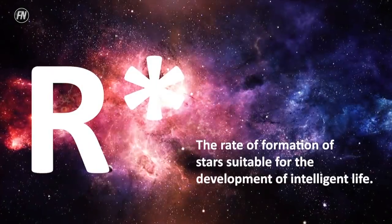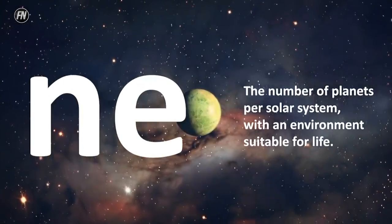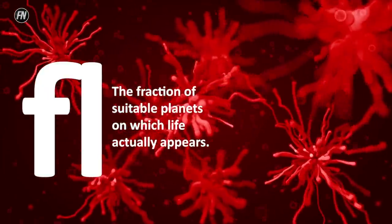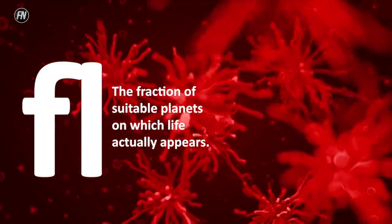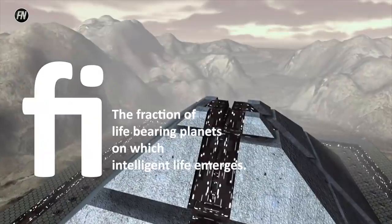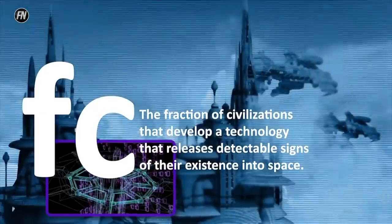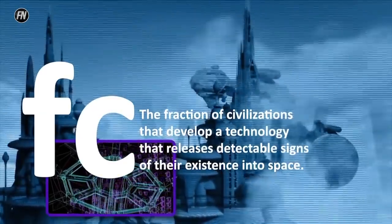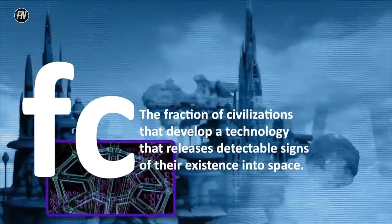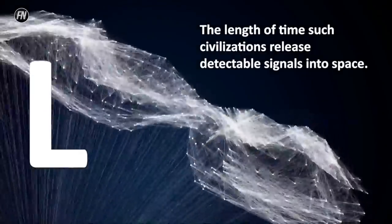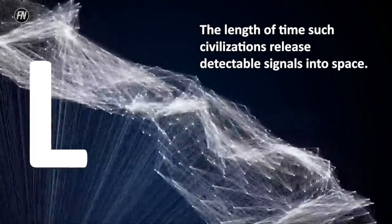It's the average rate of star formation in our galaxy times the fraction of those stars that have planets times the average number of planets that can potentially support life per star that has planets times the fraction of planets able to support life and actually do at some point times the fraction of planets with life that go on to develop intelligent life times the fraction of civilizations that develop the technology required to transmit detectable signs of their existence into space times the length of time the civilizations exist and release their signals into space.